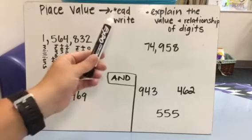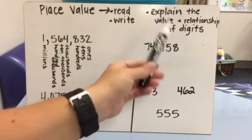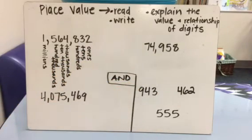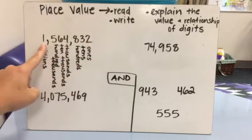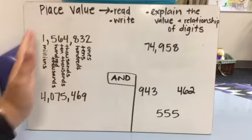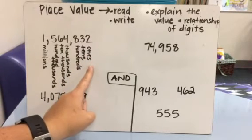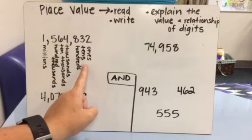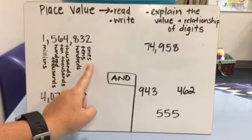So in order to read and write numbers and explain the relationships, they need to know the individual place values. So like I said, they need to go up to the millions place. So we're going to kind of backtrack to where they started from. In kindergarten, they started with the ones and the tens. And these build on each other.